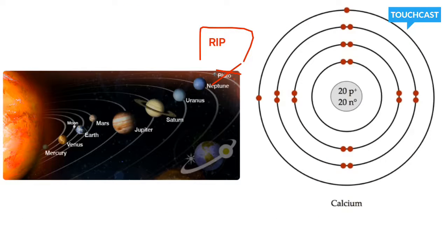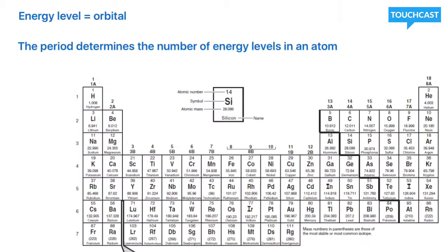Electrons orbit at a set level around our nucleus, very similar to the way the planets orbit around the sun. Just in case I forgot to mention it, energy levels are the same thing as orbitals.